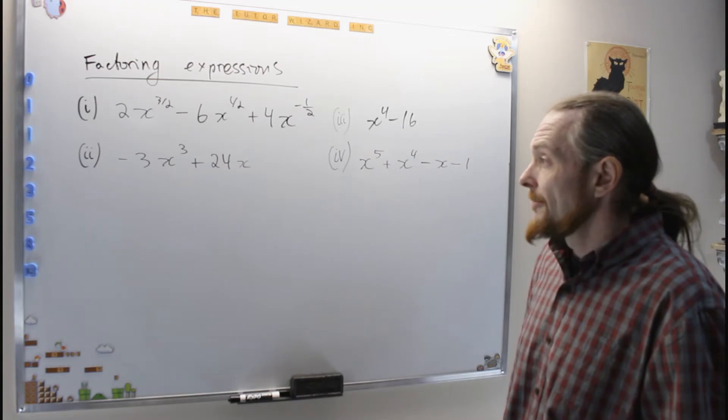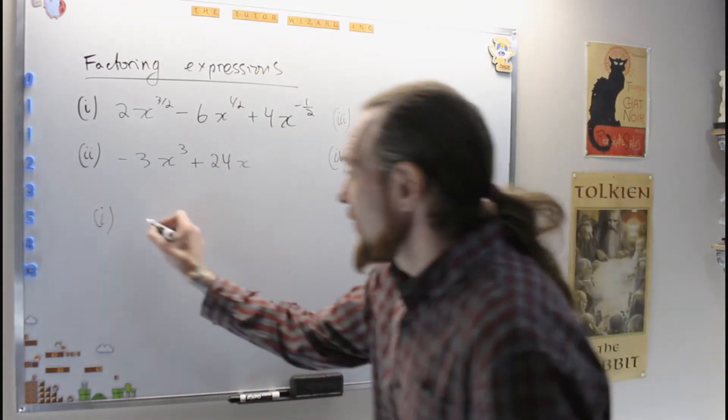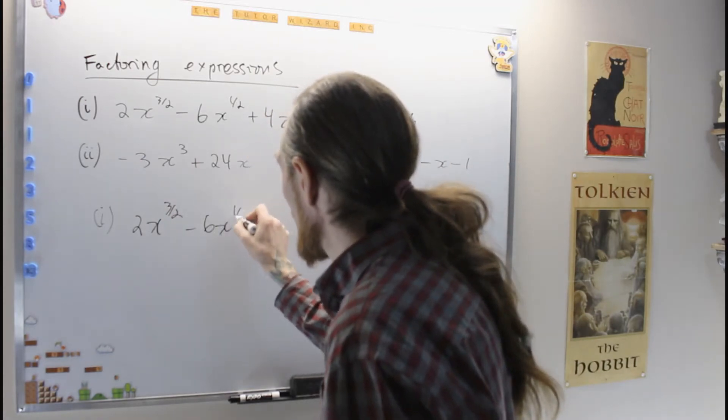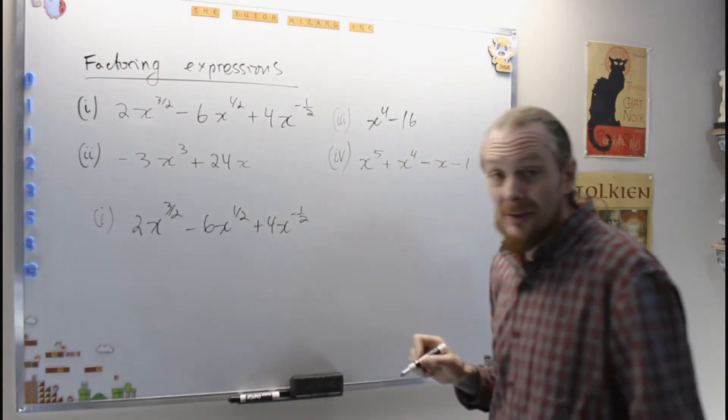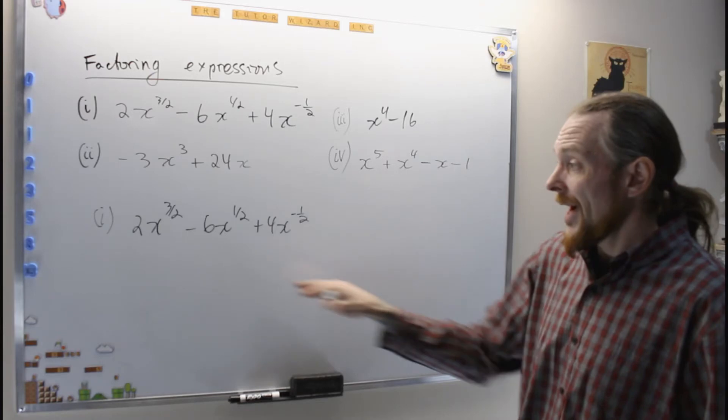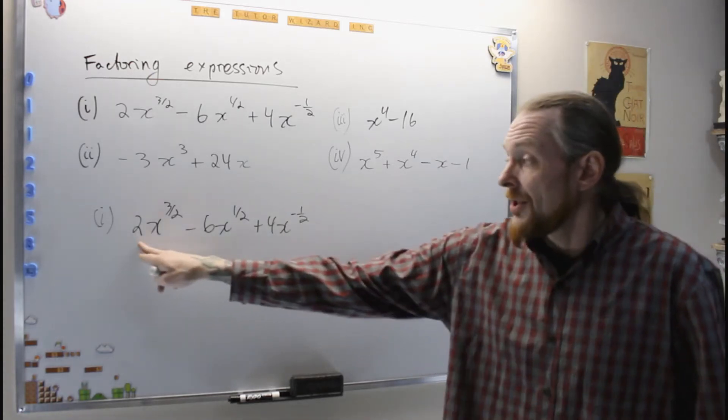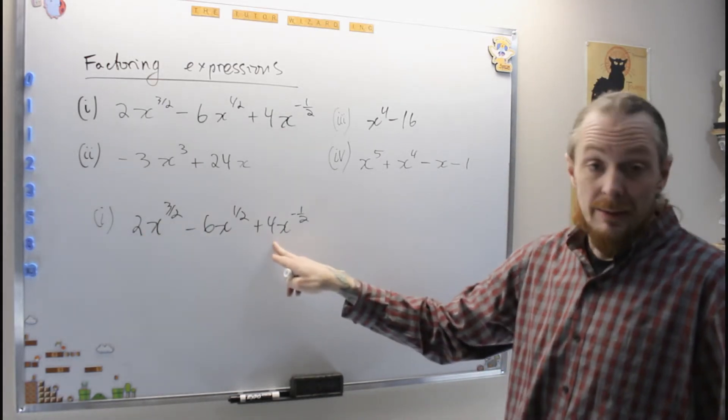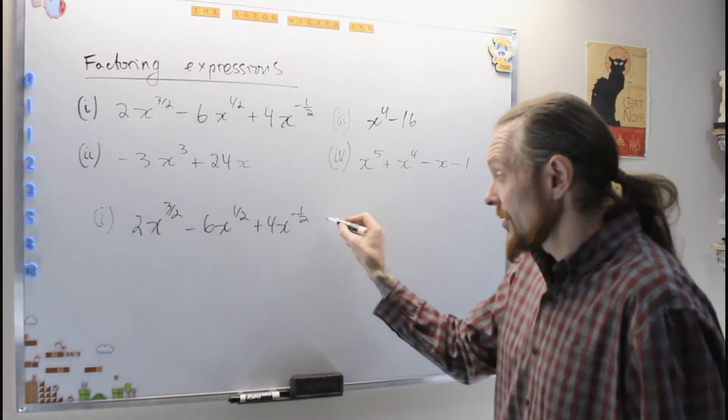The first one, what we have is 2x to the 3 over 2 minus 6x to the 1 half plus 4x to the minus 1 half. I'll do the first move first, which is the easier move. I notice I have x to the powers in each term, and I have 2 in each term. 2 times 1, 2 times negative 3, and 2 times 2. So you have to see that also. Each term is even, so I can pull a 2 out.